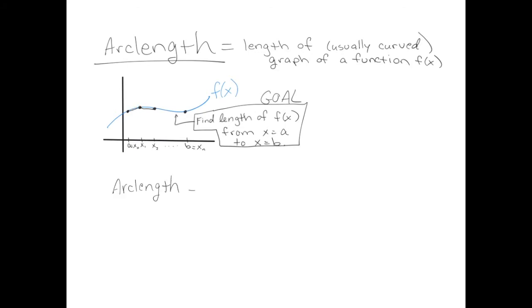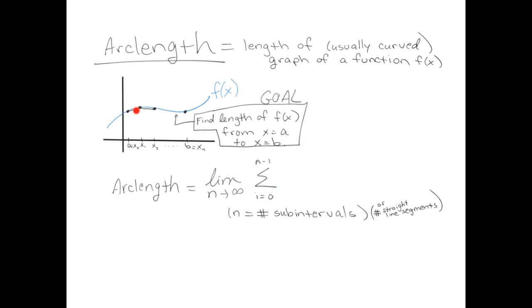The arc length in terms of a Riemann sum would be the limit as n goes to infinity, and we would add up the length of all of these subinterval lines. Here n is the number of subintervals, or the number of straight line segments we're using to estimate the length of the curve. We should be adding up the length of one of these lines on a single subinterval. The length of the subinterval is change in x, and the vertical distance is change in y. The change in x, change in y, and the black hypotenuse make a right triangle, so using the Pythagorean theorem, the length of one line segment is the square root of Δx squared plus Δy squared.